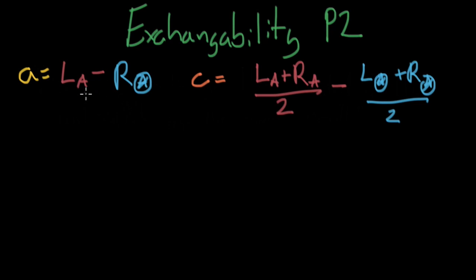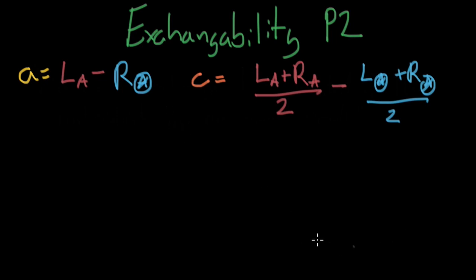In exchangeability part one, we defined association between the left-hand side of the population that is treated minus the right-hand side of the population that is untreated. And causation will be the full population that is treated minus the full population that is untreated, comparing apples to apples. The assumption of exchangeability was that we could exchange the treated population with the untreated population and get the same result.